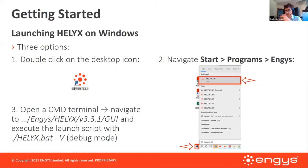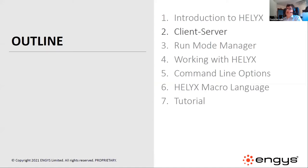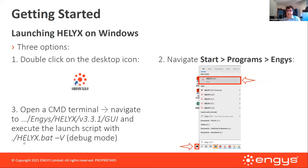On Linux, the command is exactly the same except instead of helix.bat you use helix.sh. For Helix Core, the applications and utilities use the same names on both platforms — for example, simpleFoam runs identically on both. If you want to run in parallel using MPI, the MPI launch commands differ slightly between Windows and Linux, but the concept is the same.